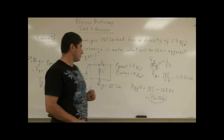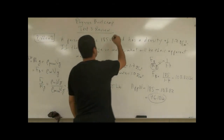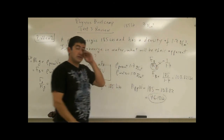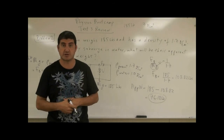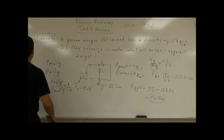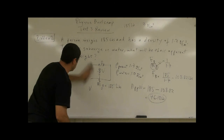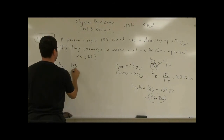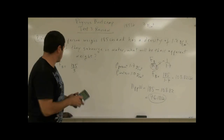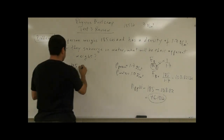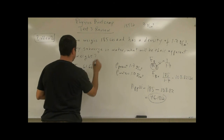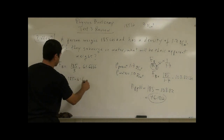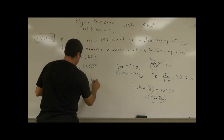Let's do this quicker with different numbers. Say you have a 185-pound person in water and their density happens to be 3 grams per cubic centimeter. The buoyant force equals 185 divided by 3, which is 61.67 pounds. So the apparent weight is 185 minus 61.67, which equals 123.3 pounds.